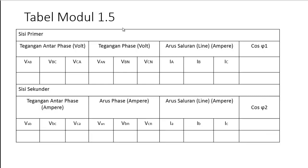Berikut tabel untuk modul 1.5. Berarti nanti menghitung tegangan antar fase, kemudian tegangan fase ini dihubungkan dengan netralnya, kemudian arus saluran atau line nya berapa, sekaligus nanti menghitung dari cos φ nya. Selanjutnya adalah untuk sisi sekunder juga sama seperti sisi primer.